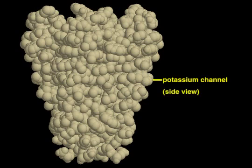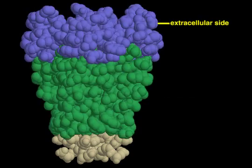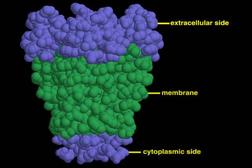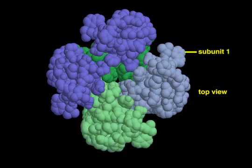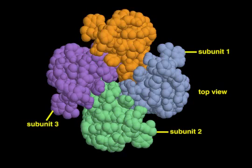The bacterial potassium channel is a multi-pass transmembrane protein in the plasma membrane. It is built from four identical subunits that are arranged symmetrically. A pore in the center of the protein allows selective passage of potassium ions across the membrane.